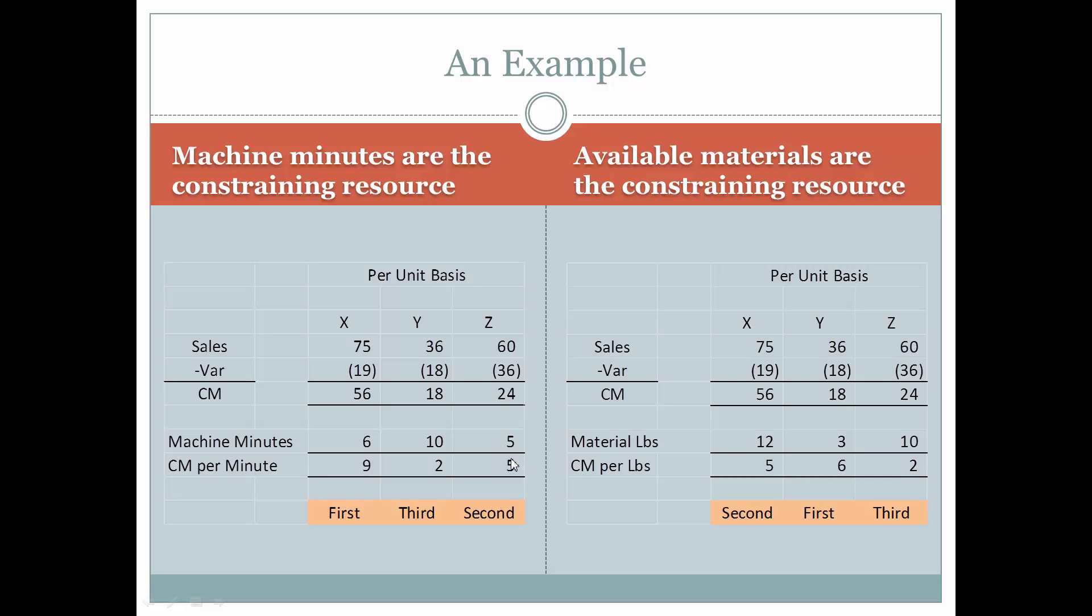Therefore we want to look and put first in line the products that we're going to be making since we have this constrained resource. The first product that we're going to queue up to make is going to be product X. After that, $9 per contribution per minute. After that, the next highest one is Z, $5 per minute. So therefore, the next thing we would want to produce would be Z. And then after that, whatever minutes are remaining, we would want to produce X.